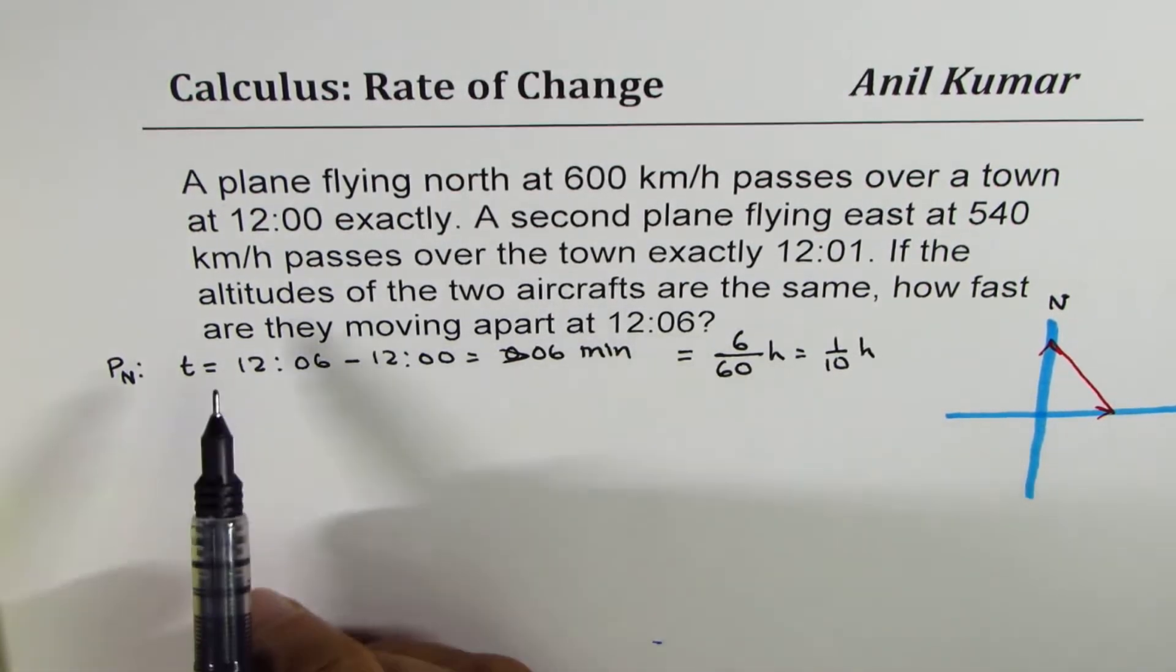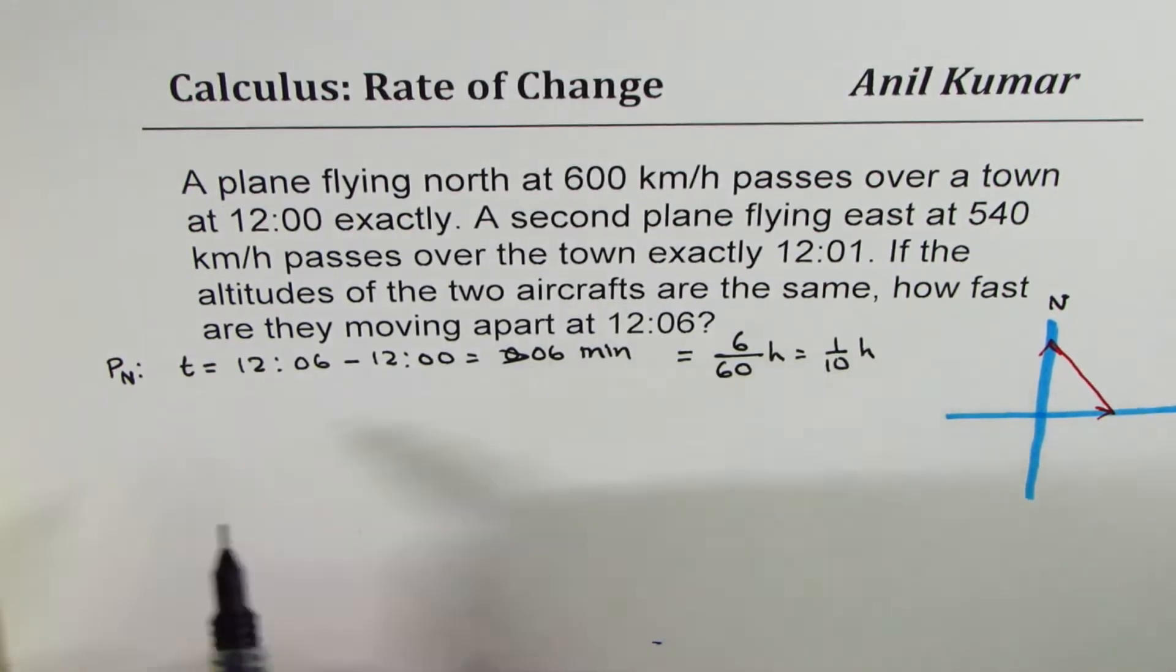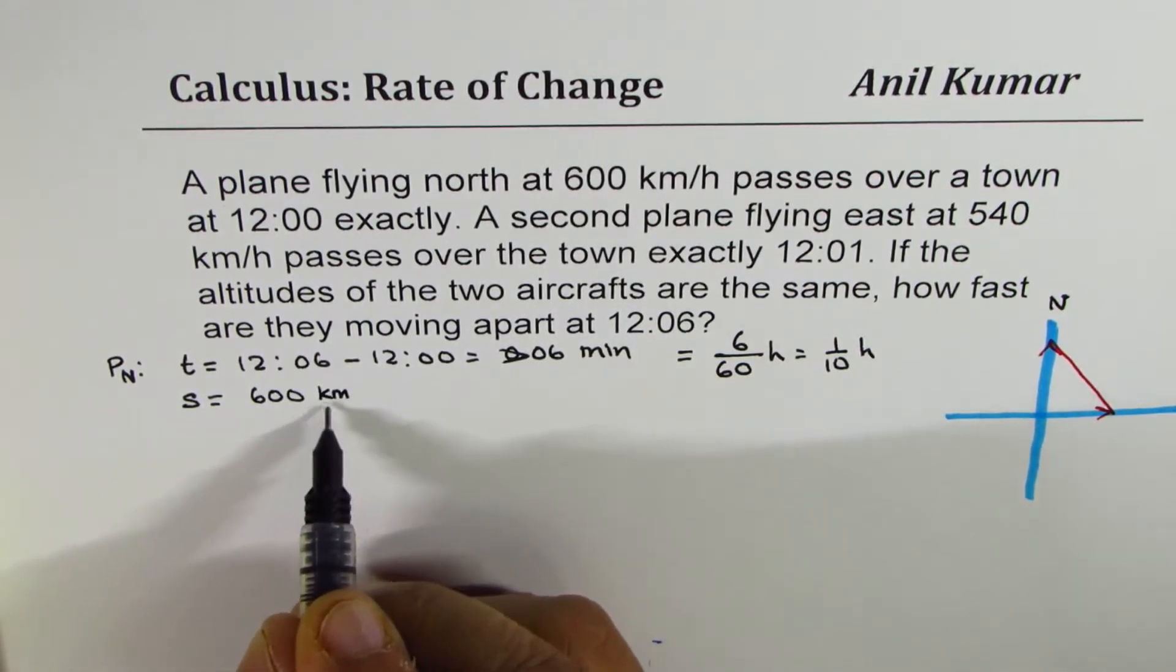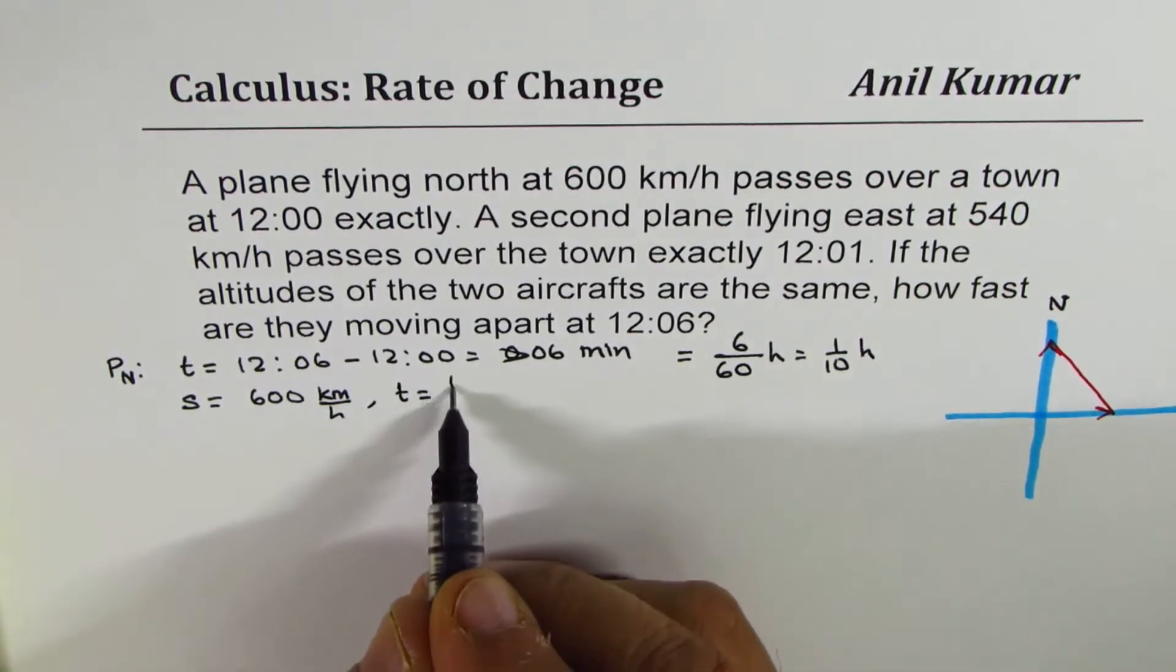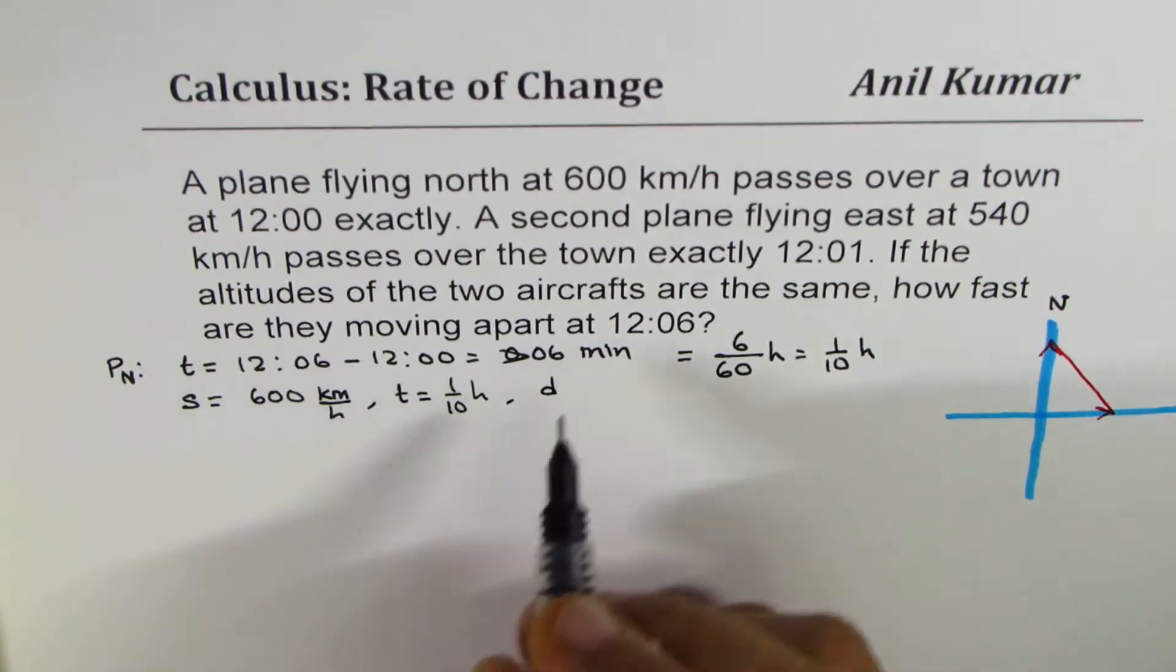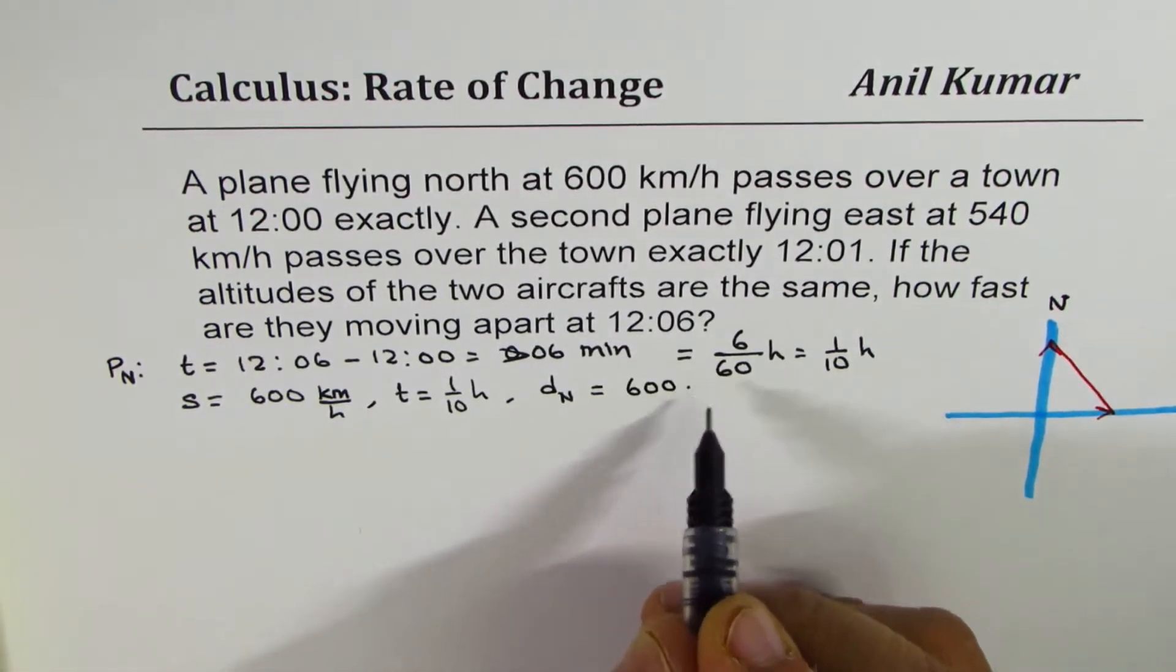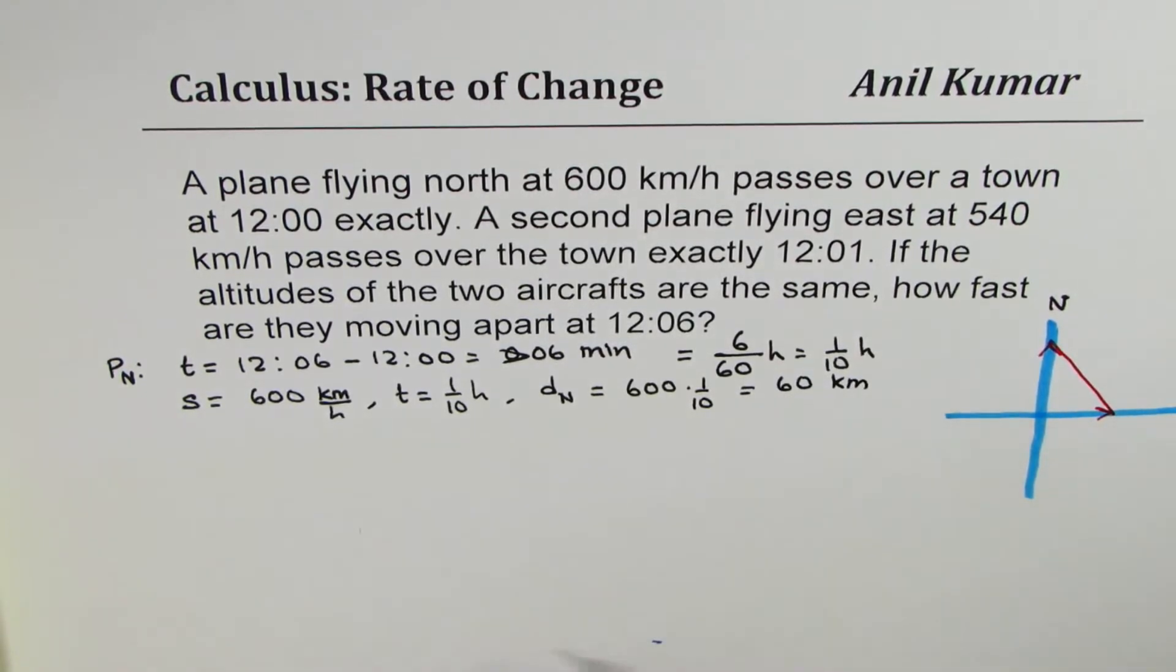Now what is the distance covered in one-tenth of an hour? Since speed is equal to 600 kilometers per hour and time t is 1/10 of an hour, then the distance for plane going to north will be product of these two, that is 600 times 1 over 10, which is 60 kilometers.